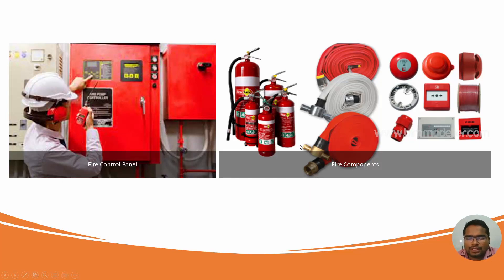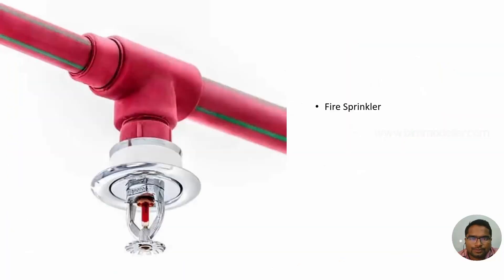All fire components are red in color. Whenever you see a pipe running in your building that is red, you can identify them as fire protection components. You can see this in many movies or other places if you are not familiar with fire protection.